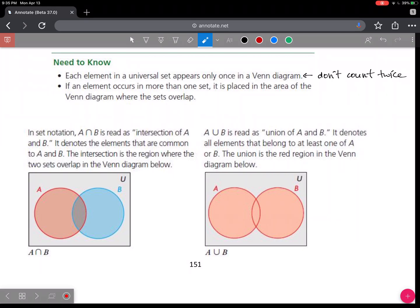In set notation, A intersect B denotes the elements that are common to A and B. The intersection is the region where the two sets overlap, represented by the football shape.